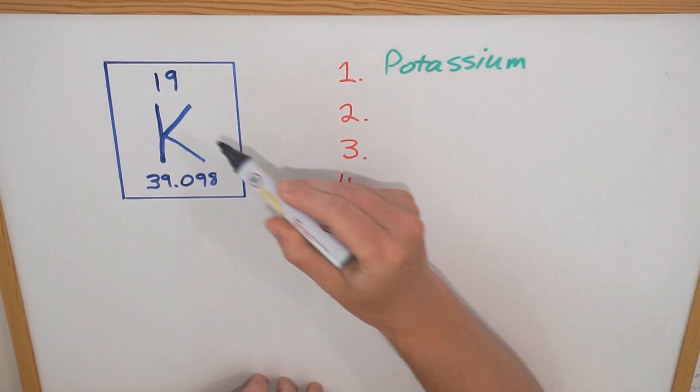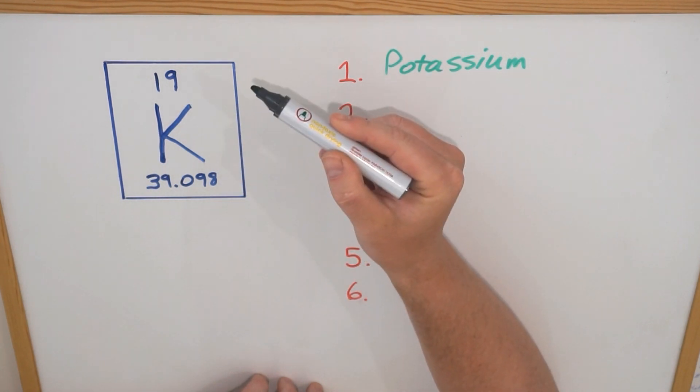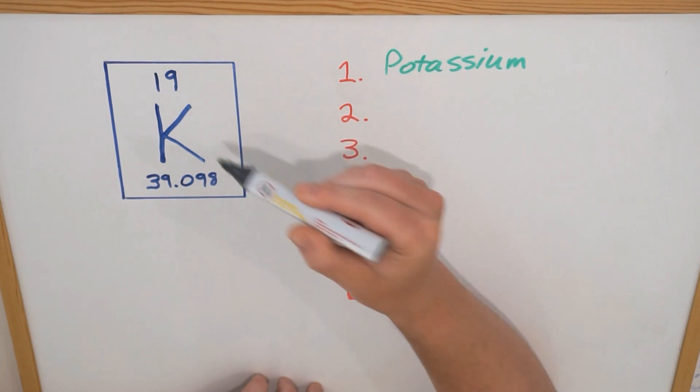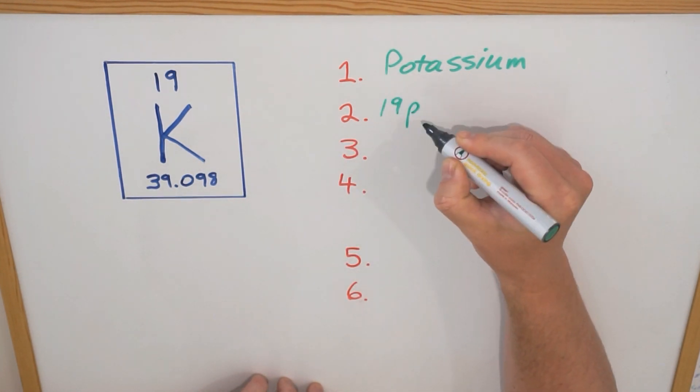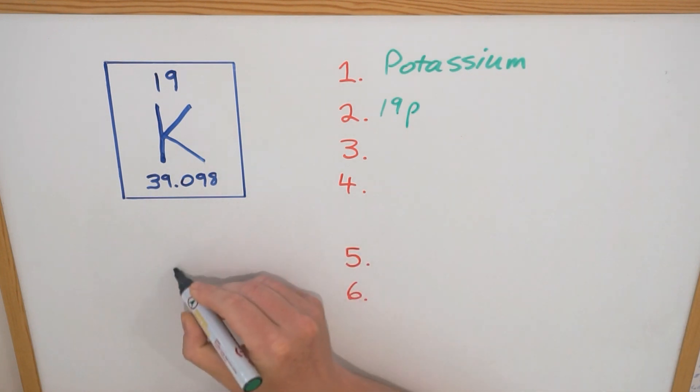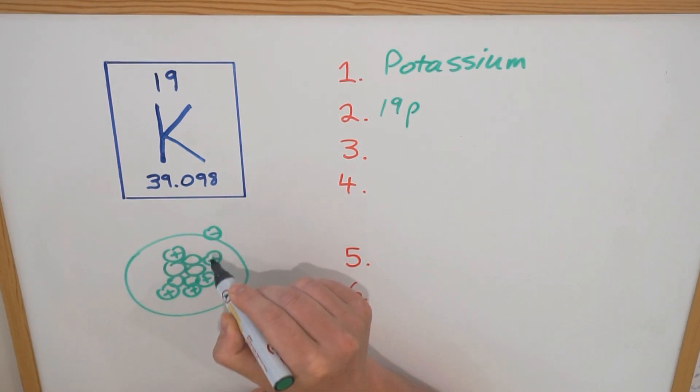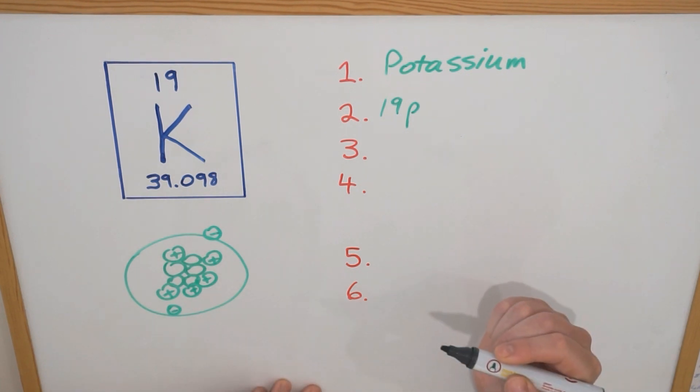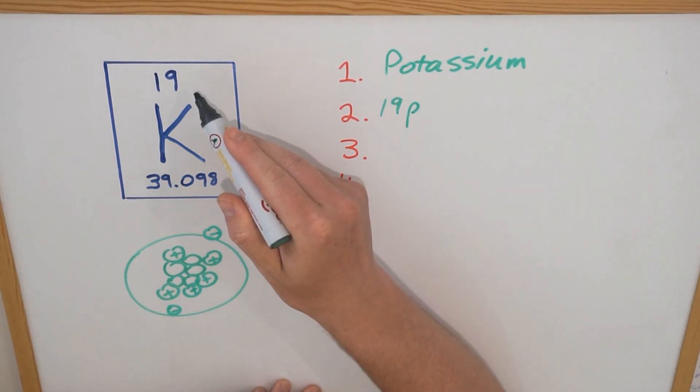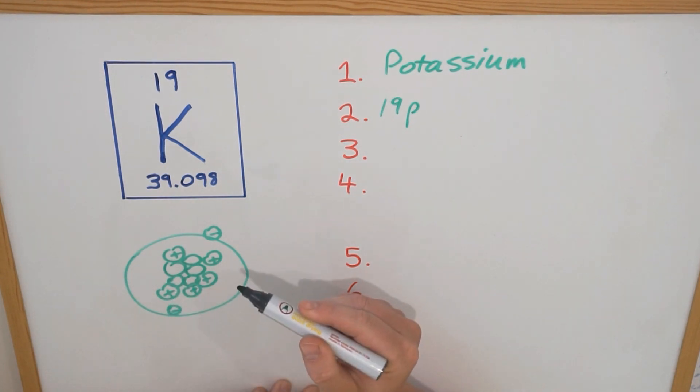For instance this 19, sure it tells us that it's the 19th element on the periodic table, but it also tells us that there's 19 protons. If you recall, in the center of an atom we have the nucleus which has our neutrons that have no charge and our protons which have a positive charge, and flying around the outside of the nucleus we have our electrons which have a negative charge. So this atomic number of 19 tells us that not only is it the 19th element but there's 19 protons in the nucleus of a potassium atom.